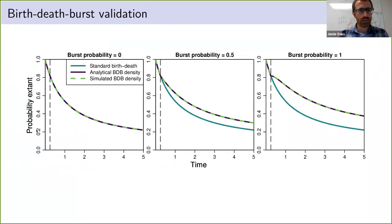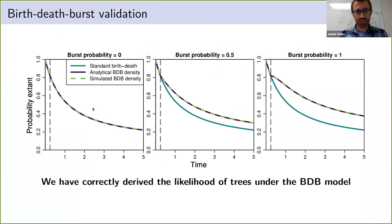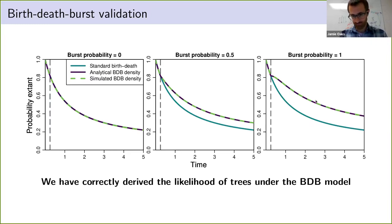We did correctly derive the likelihood density of trees under this new model — if we did it correctly, the purple and green lines should overlap, meaning our math matches the simulation, and it does.